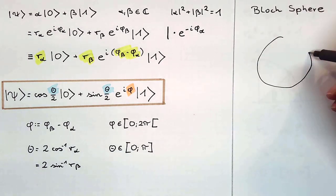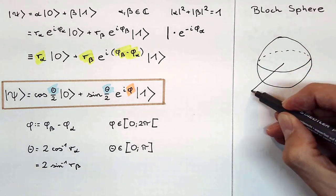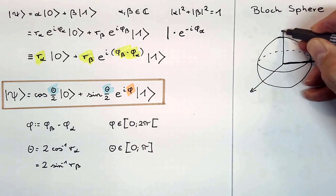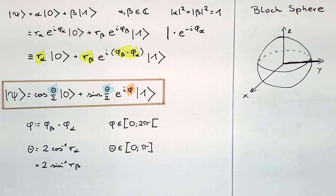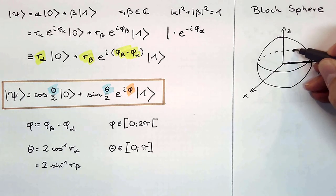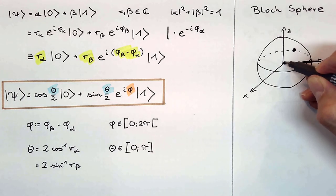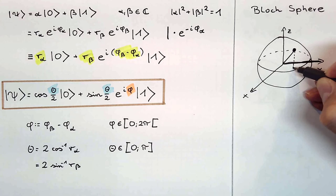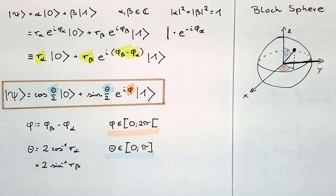At this point we should finally draw the famous Bloch sphere, which is just a sphere around the origin with radius 1. The state of a qubit psi can be assigned to a certain point on this sphere. The position of this point is determined by the angles zeta and phi.